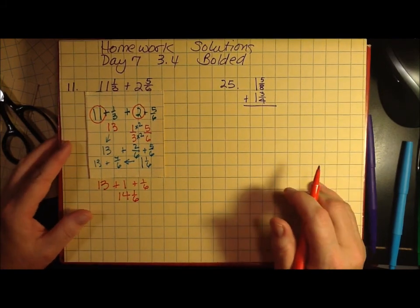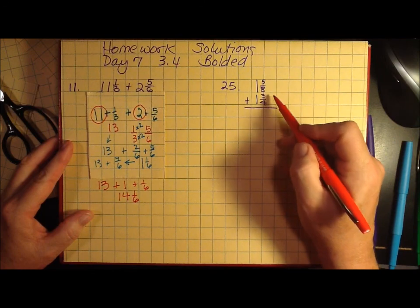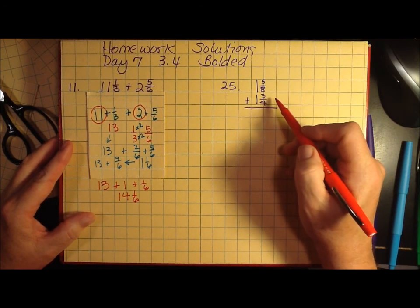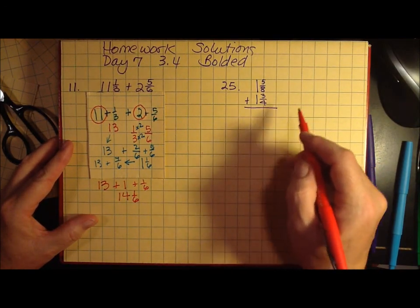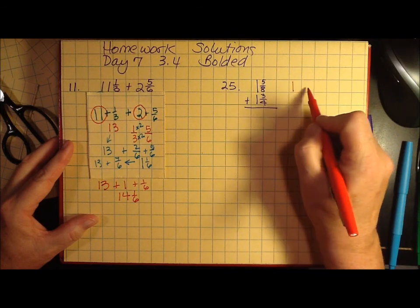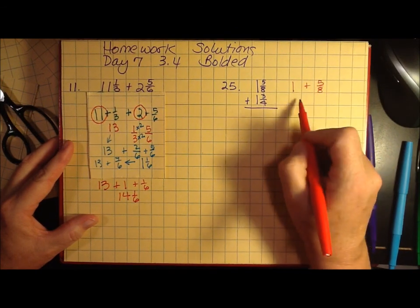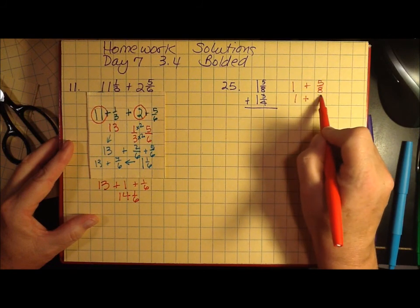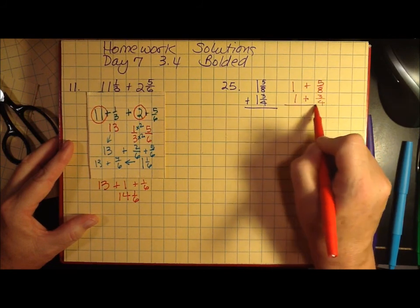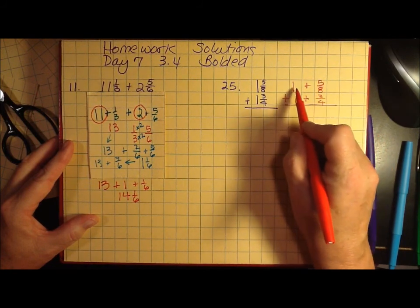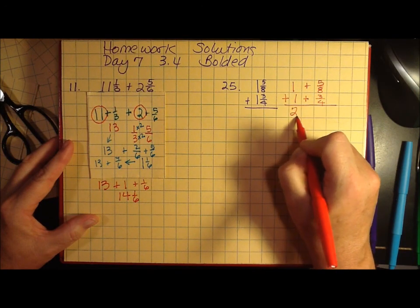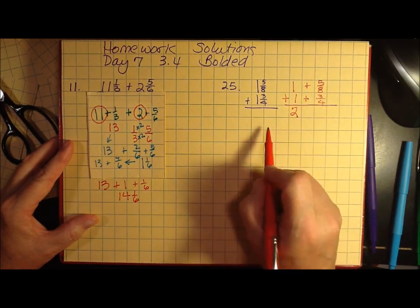We have a similar problem here. It's set up vertically as opposed to horizontally. I'm going to do the same thing here and think about this as 1 plus five-eighths and 1 plus three-fourths. I'm adding. I'm going to combine my whole numbers and have 2.